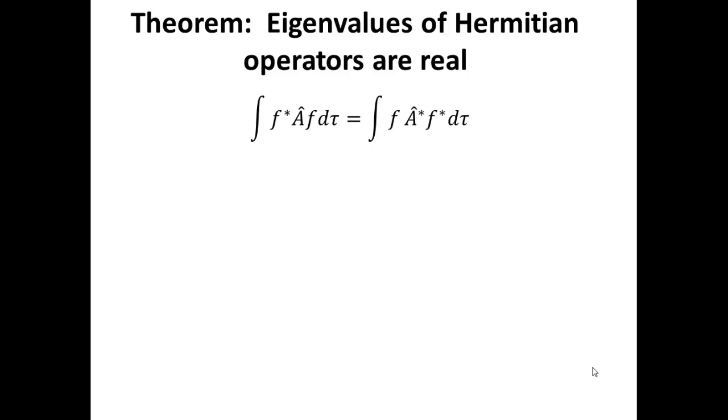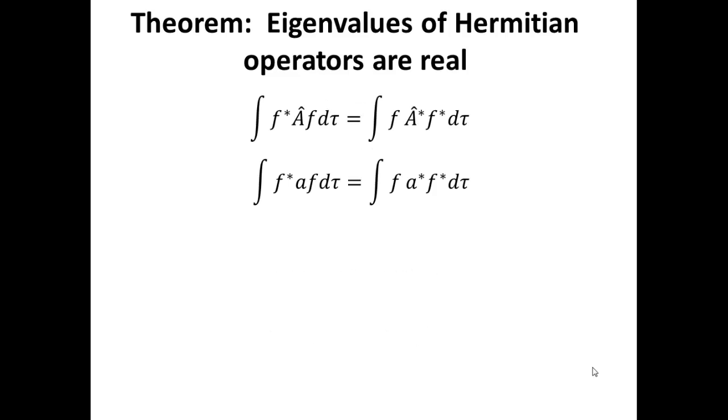That's the definition of a Hermitian operator. So if we take that relationship and we plug in our eigenvalue equations, the left-hand side we replace a operator acting on f with the result of that operation, which is the eigenvalue a being returned and the function f being returned.